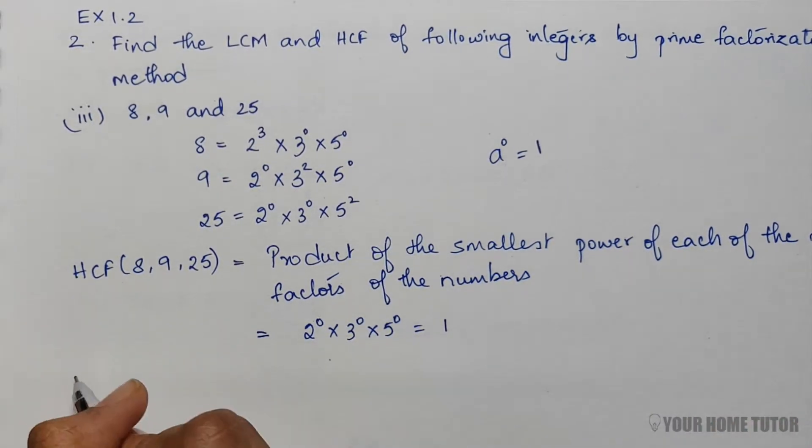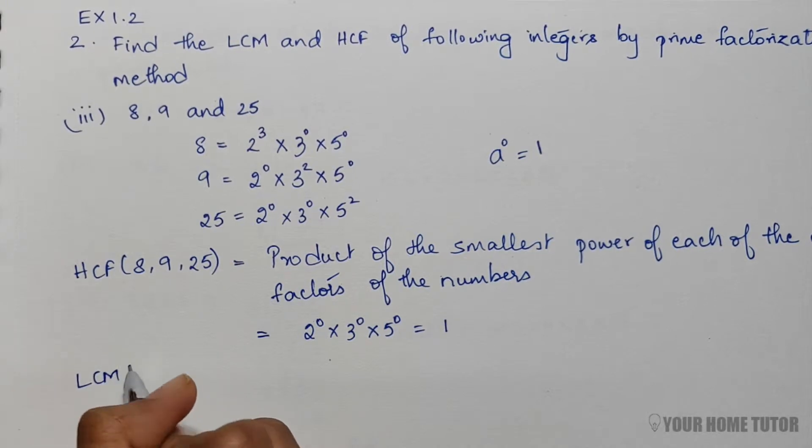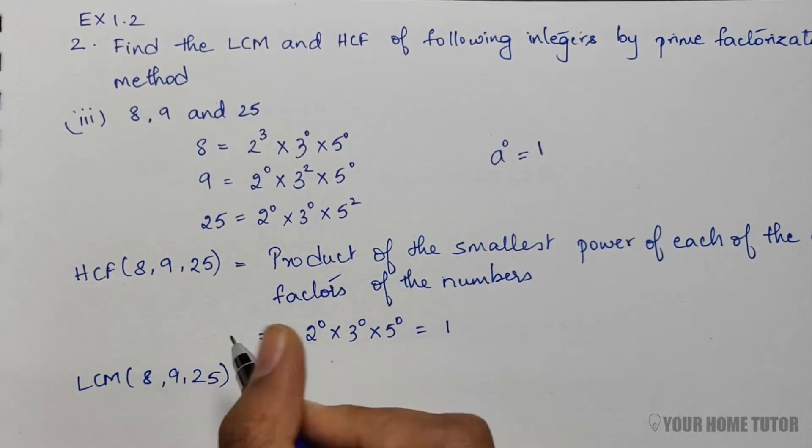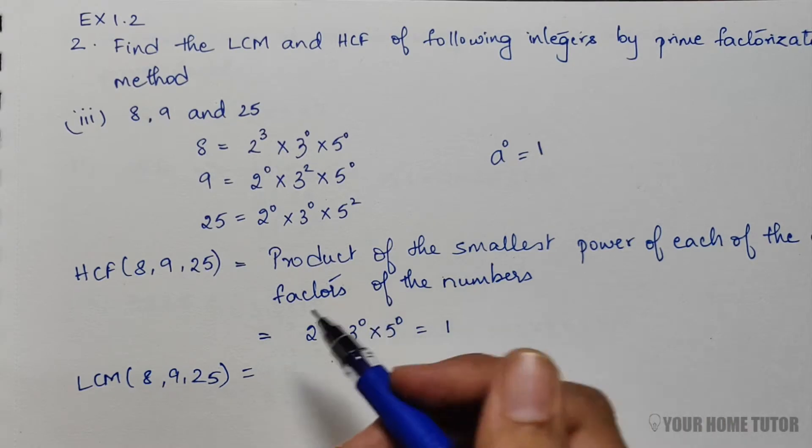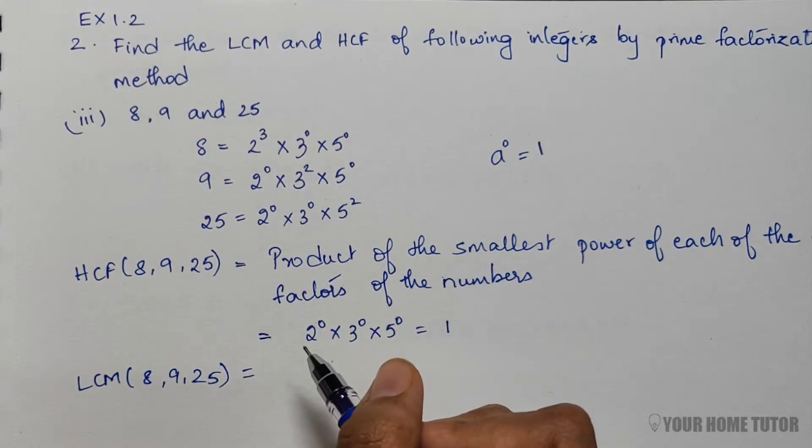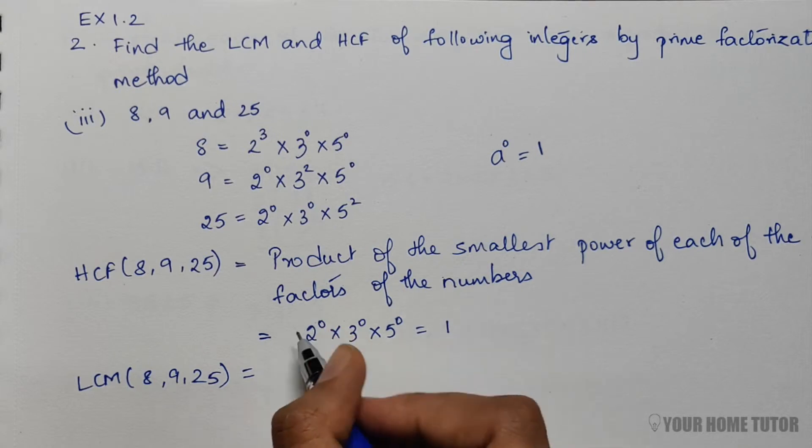And for LCM of 8, 9, and 25, it is the opposite of HCF. That is, the product of the greatest power of each of the prime factors of the numbers.